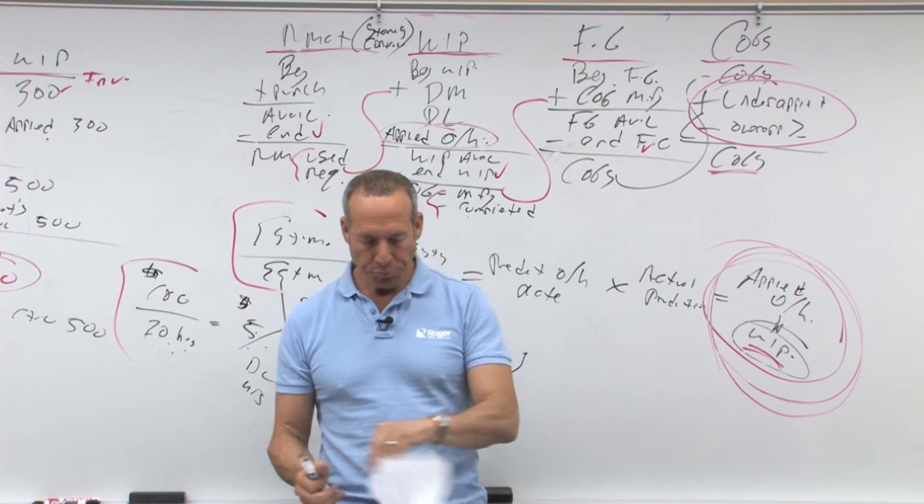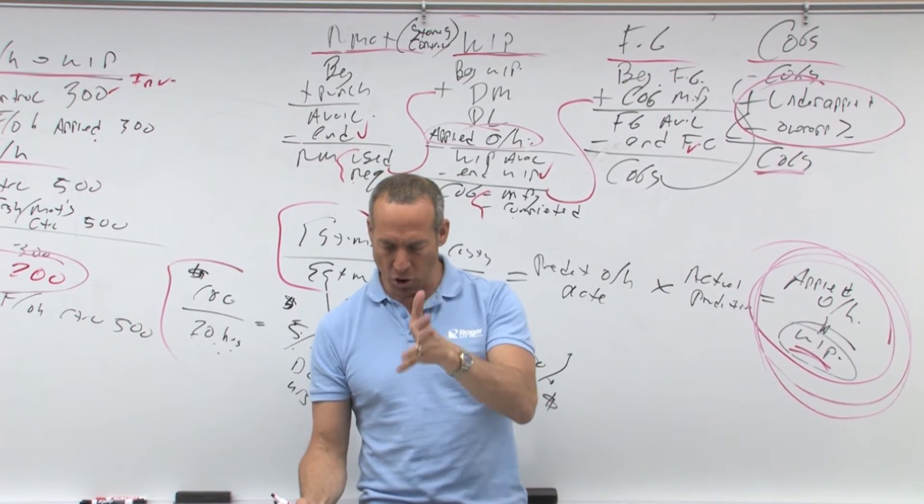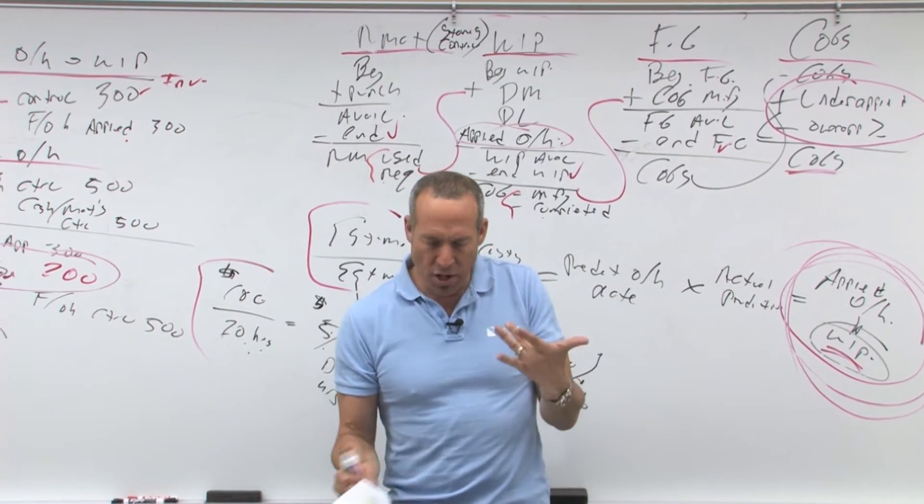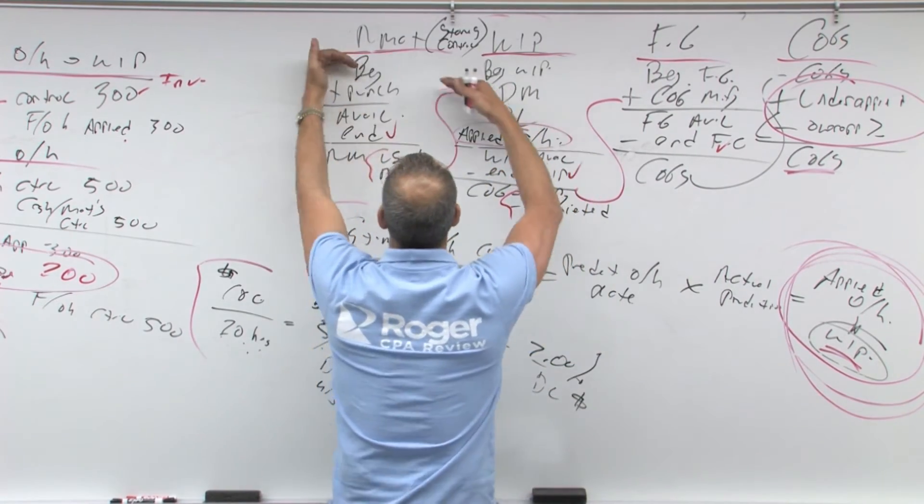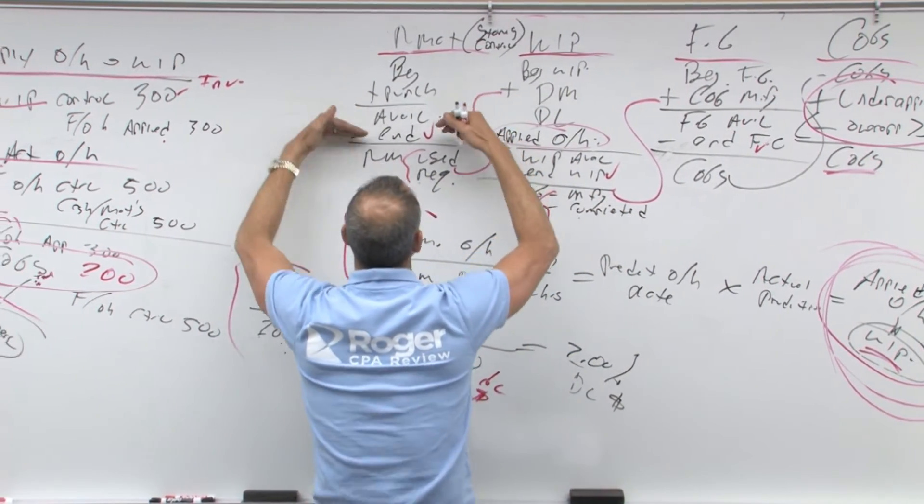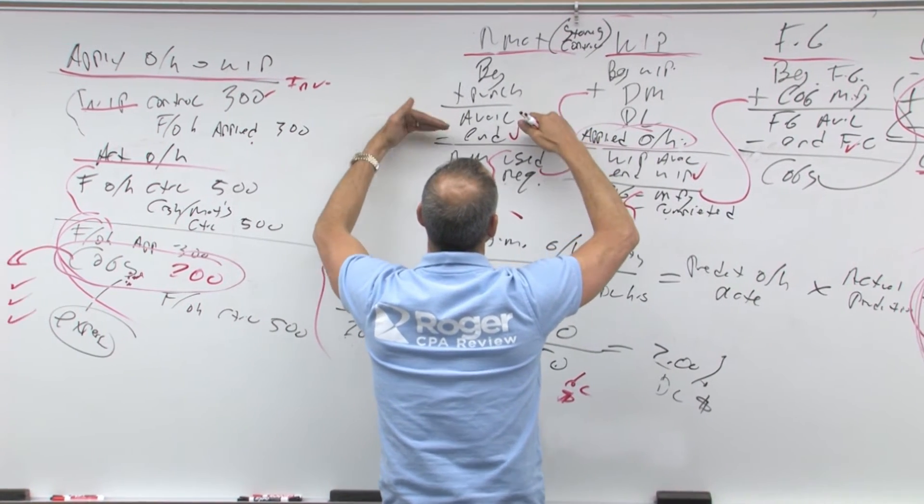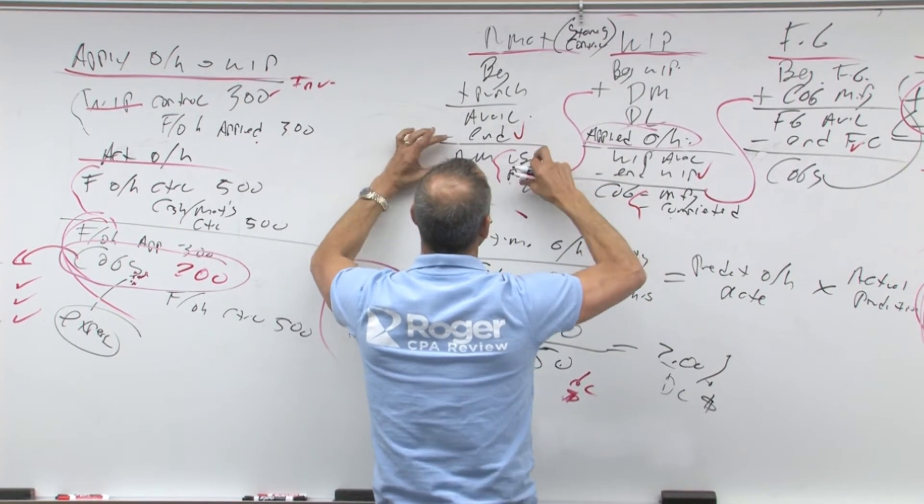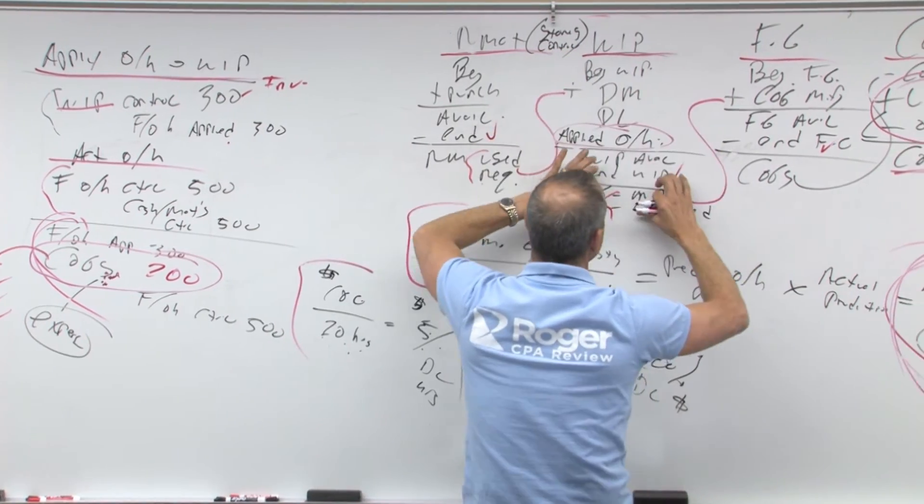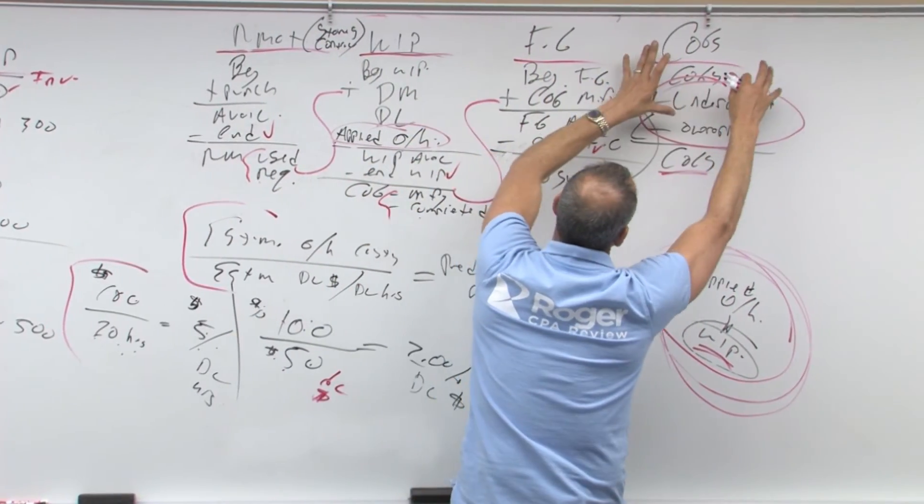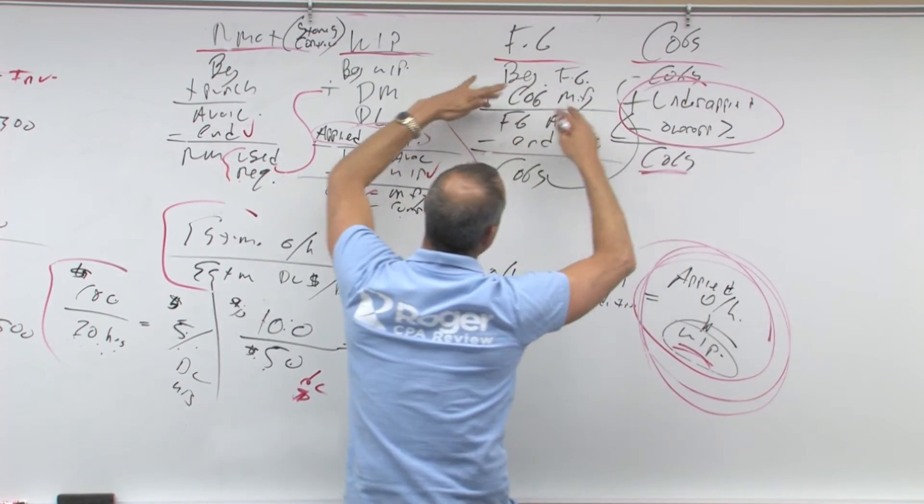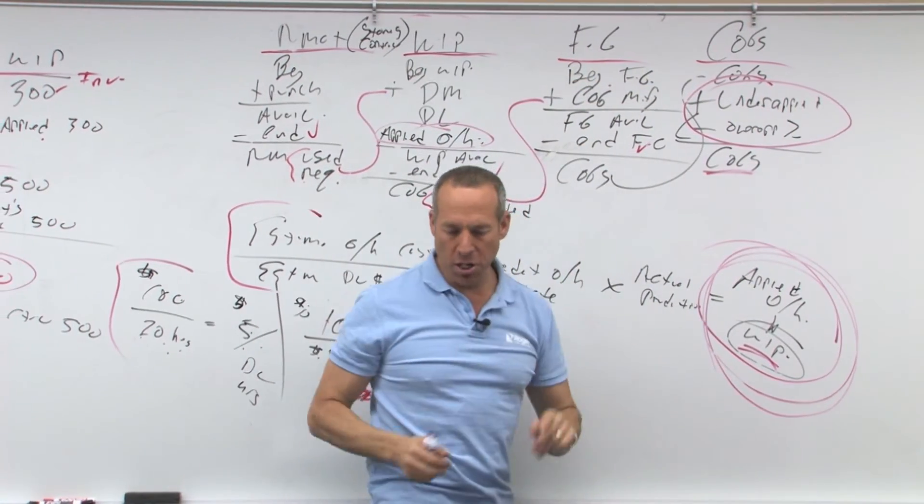All right. Look in your notes. You'll see there in your notes the flow of the system. And it's, again, everything is beginning plus some purchase is available minus ending is boom. Right? Beginning plus you added some is available minus what's still here is what went away. Where did it go? Into whip. Where did it go? Into finished goods. Where did it go? Cost of goods sold.